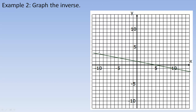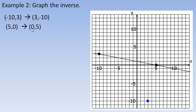To graph the inverse of a given line, identify points on the original. For example, the point (-10, 3) on the original becomes (3, -10) on the inverse. The point (5, 0) becomes (0, 5) on the inverse. For a straight line you only need two points to draw it. The result shows that the original and its inverse are reflections of each other in the y = x line.